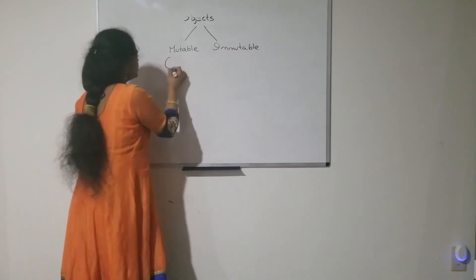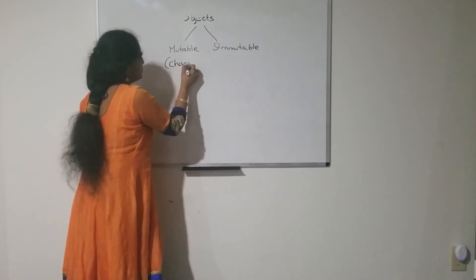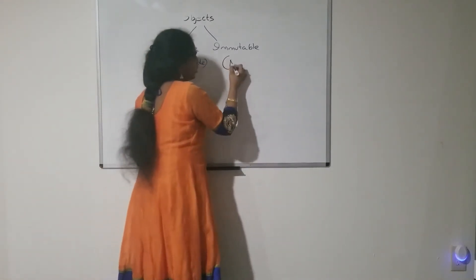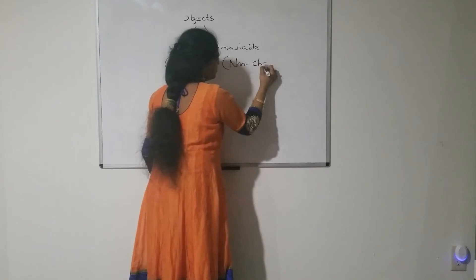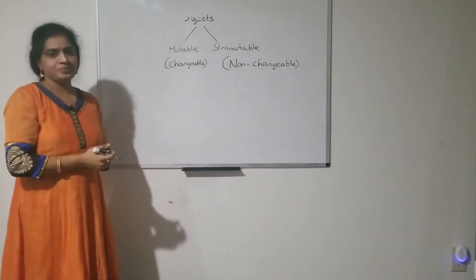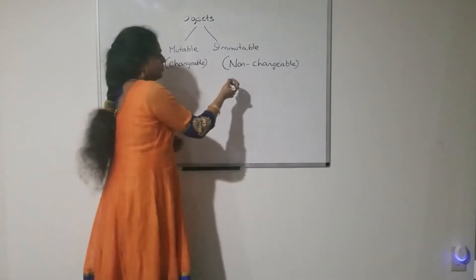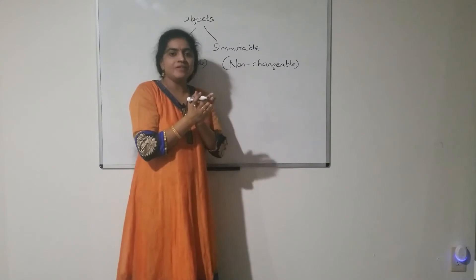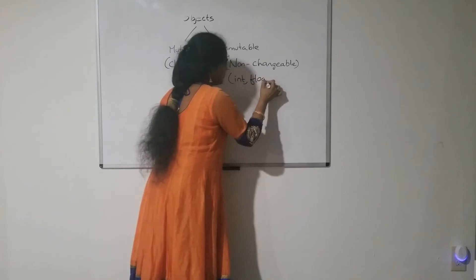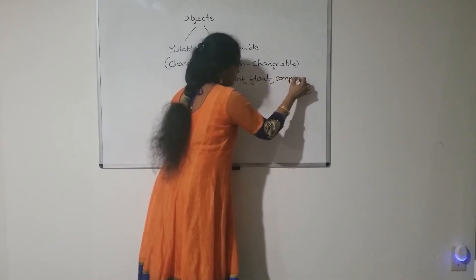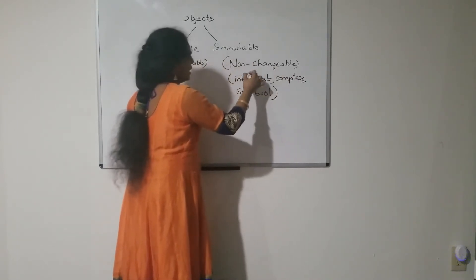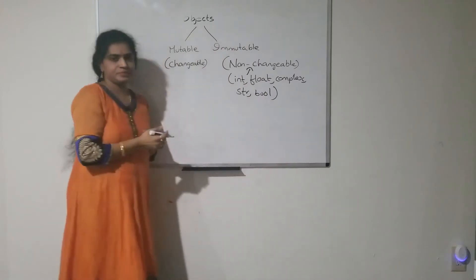Mutable means which can be changeable — those are called mutable. Immutable means non-changeable objects. Whatever the fundamental data types we have learnt — that is int, float, complex, string, and bool — all these come under immutable data type.